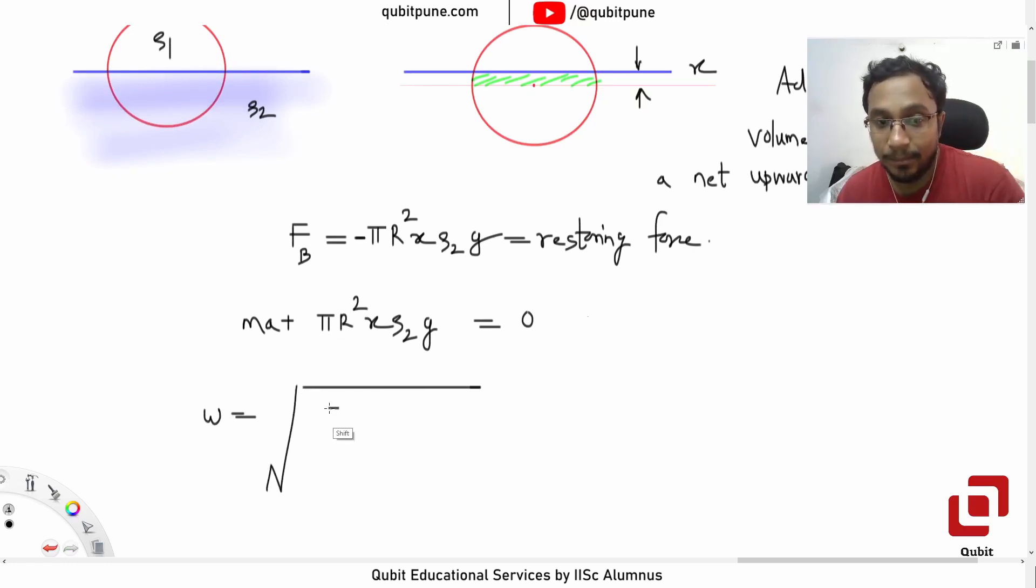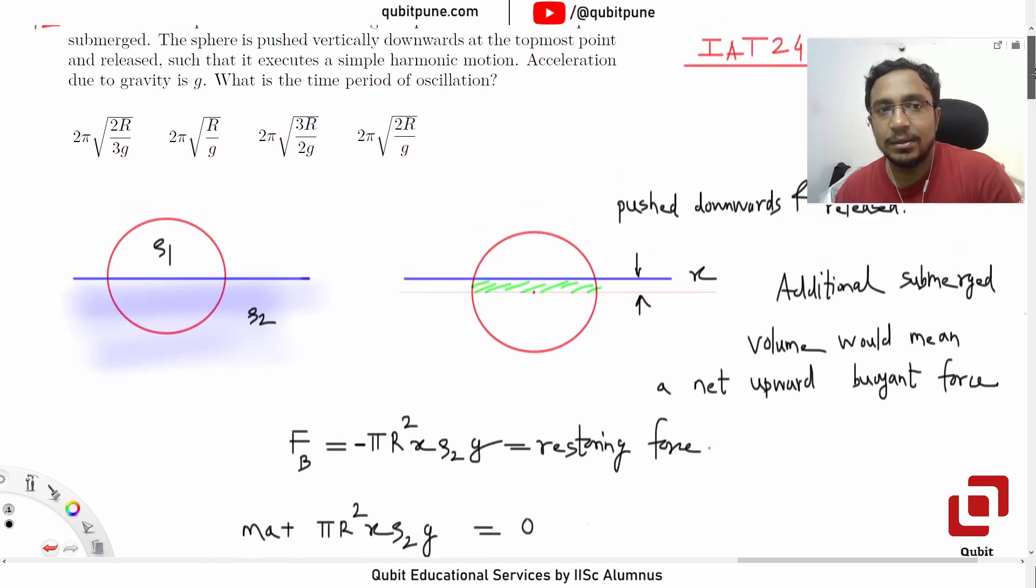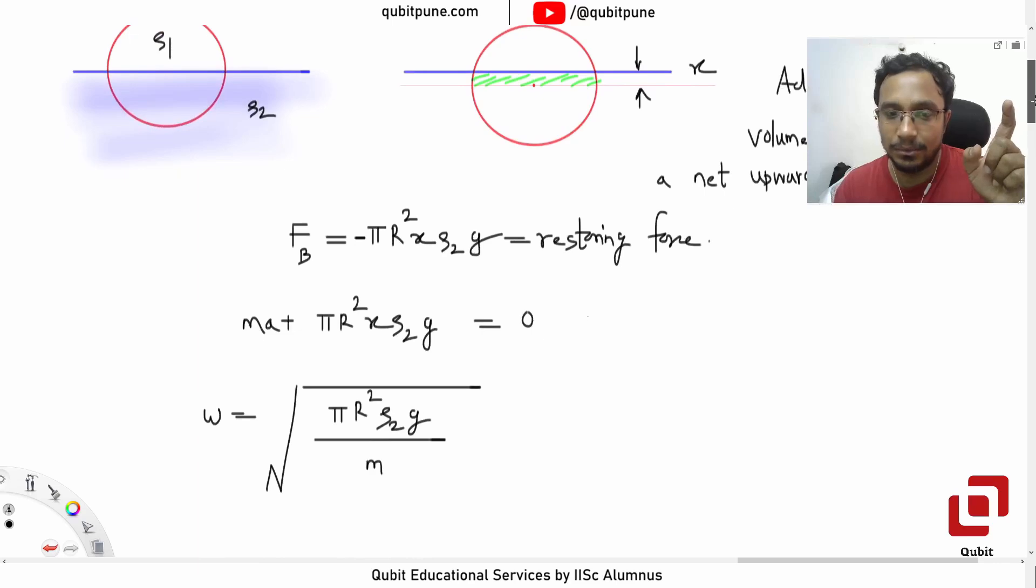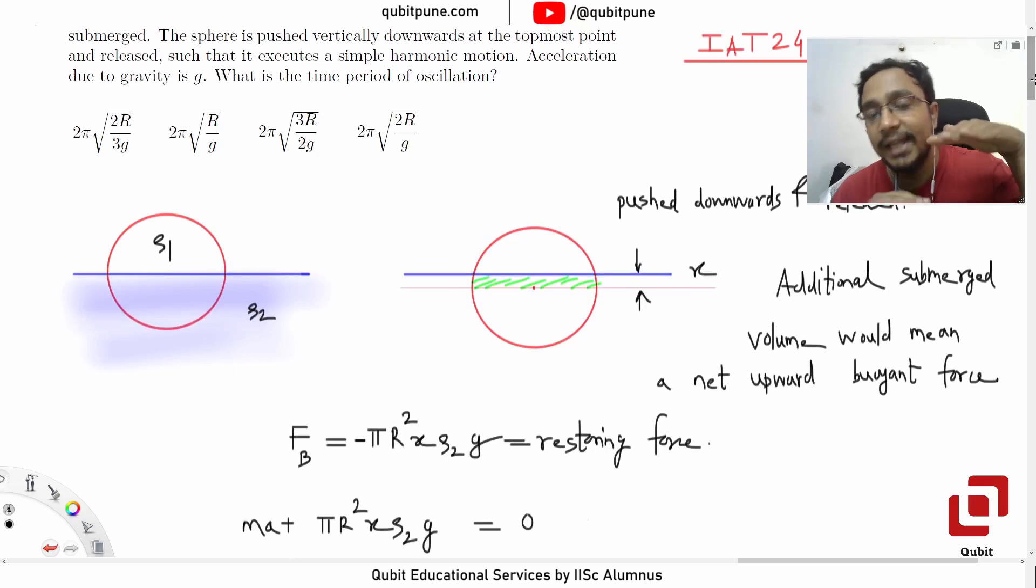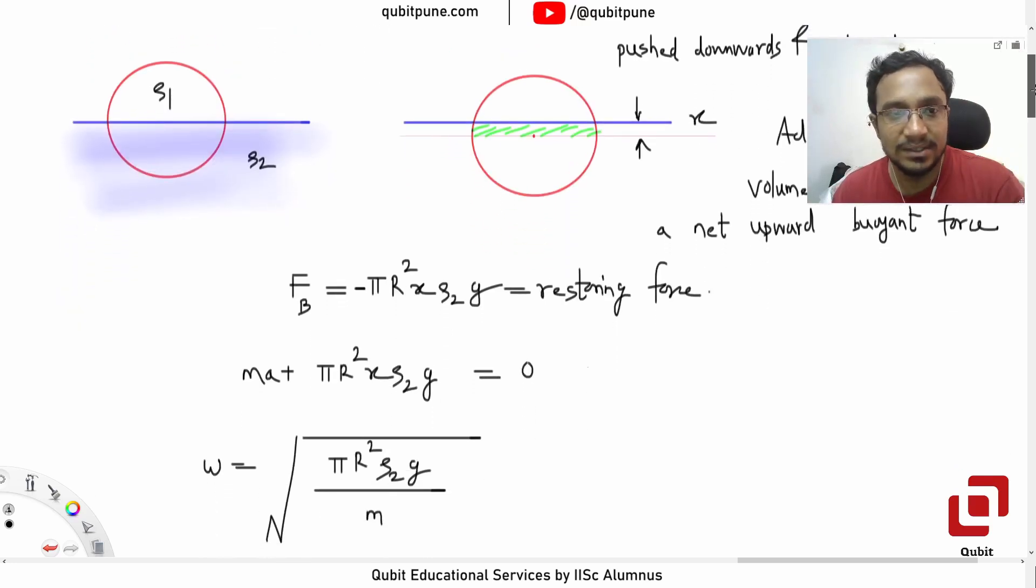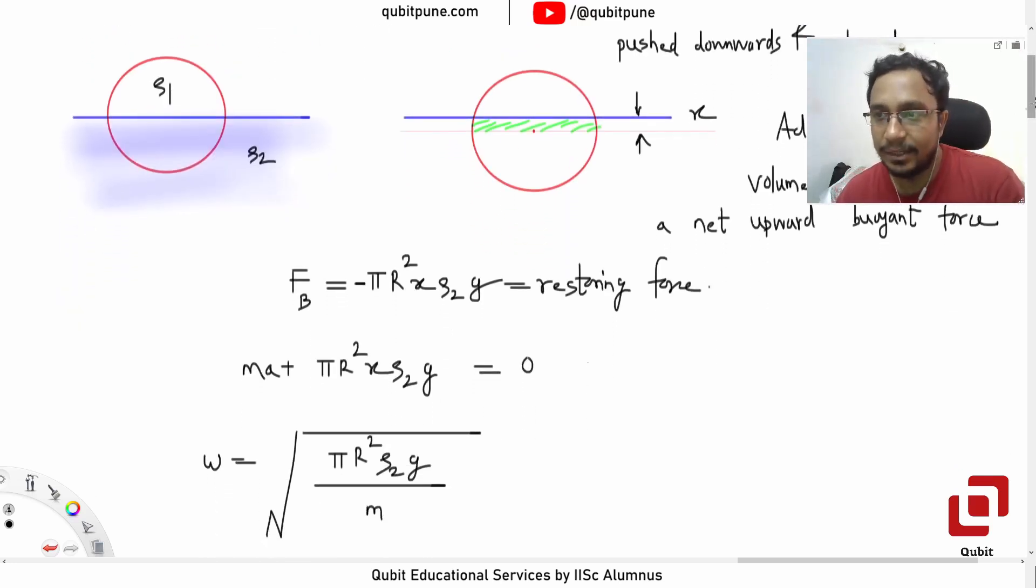So k is πr²ρ₂g and m is present. But this is seen nowhere in the options because in the options they don't seem to care about the densities. But we can definitely find the density ρ₂ or relationship between ρ₁ and ρ₂ by using the condition that when half of the sphere is submerged, the weight is entirely balanced by the buoyant force.